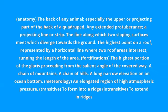A projecting line or strip. The line along which two sloping surfaces meet which diverge towards the ground. The highest point on a roof, represented by a horizontal line where two roof areas intersect, running the length of the area.